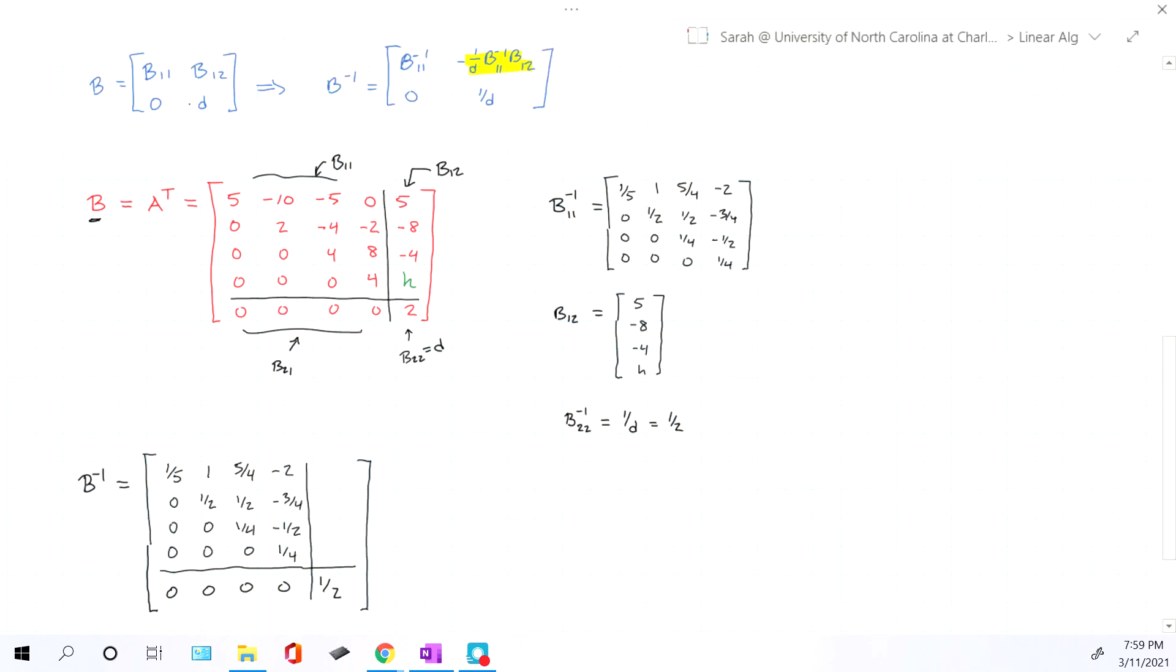So to compute that missing piece, our formula is negative 1 over D, B11 inverse, B12. So here we'll have negative 1 half, and then we'll write down both the inverse of B11 and B12. So now we just have to calculate that matrix multiplication.